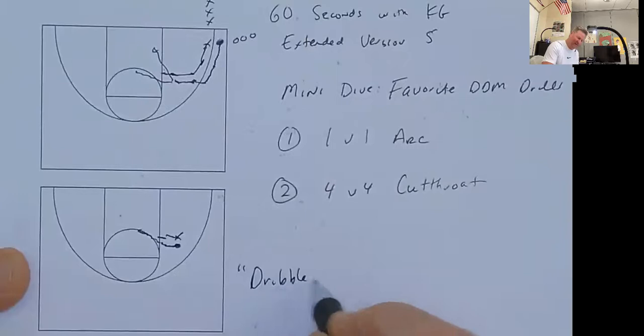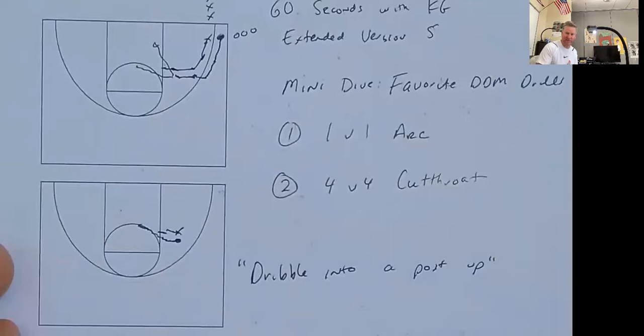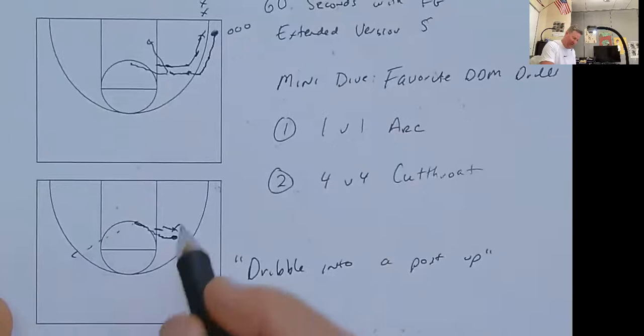And you see that a lot with guards now. And I think we have found that a great way for us to make up for a poor shooting night is getting our guards down in there. And what you'll find, coaches, is if you have maybe six guards on your roster, seven guards, whatever it might be, what you'll discover in this drill, and by emphasizing that dribble into a post-up, two or three of them are pretty good at it.